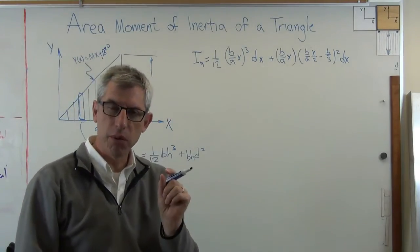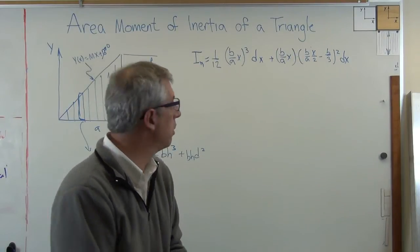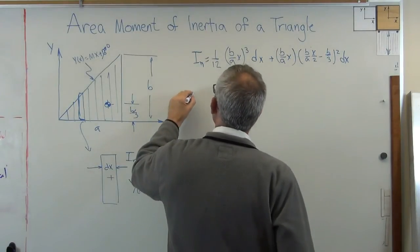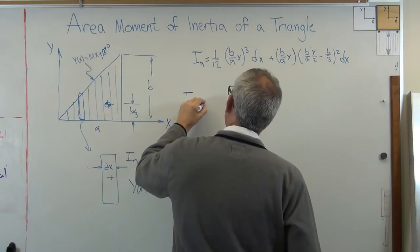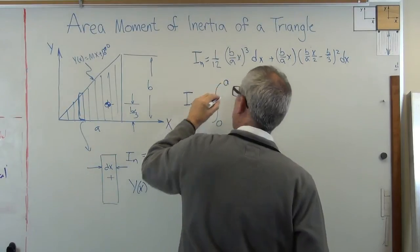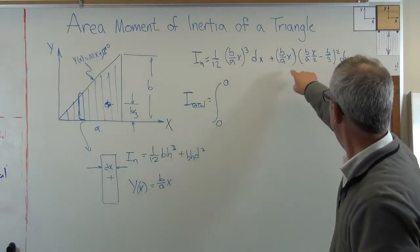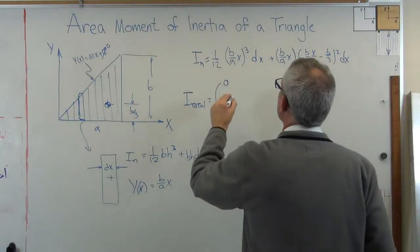I want those slices to be really small. So adding up really, really small slices, that's integration. So what I'm going to do is make one big change here. I total. I'm going to integrate from 0 to a, because I want to integrate from there to there.